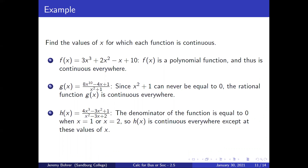Find the values of x for which each function is continuous. (a) f(x) = 3x³ + 2x² − x + 10: f(x) is a polynomial function and thus is continuous everywhere. (b) g(x) = (8x¹⁰ − 4x + 1)/(x² + 1): since x² + 1 can never equal 0, the rational function g(x) is continuous everywhere. (c) h(x) = (4x³ − 3x² + 1)/(x² − 3x + 2): the denominator equals 0 when x = 1 or x = 2, so h(x) is continuous everywhere except at these values.